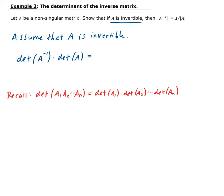So this is going to be equal to the determinant — we can write this all under the determinant of A inverse times A. And A times A inverse is just the identity matrix, so that gives us the determinant of the identity matrix, which is just one.